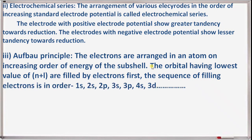Third short note: Aufbau principle. Electrons are arranged in an atom in increasing order of energy of the subshell. The orbitals having the lowest value of n + l are filled by electrons first. The sequence of filling electrons is: 1s, then 2s, then 2p, then 3s, 3p, 4s, 3d, and so on.